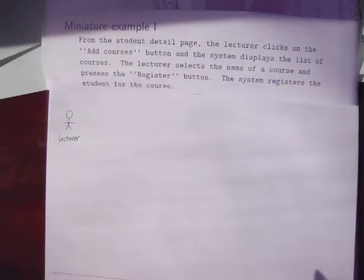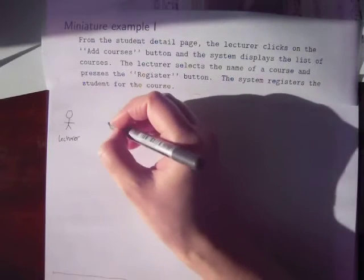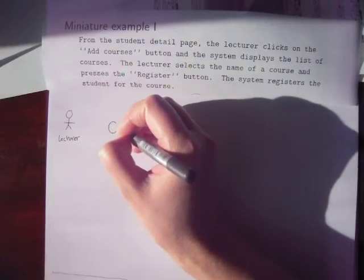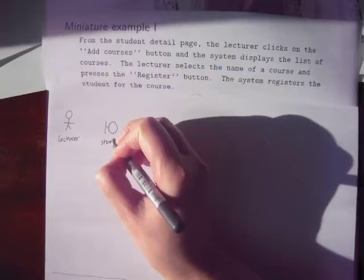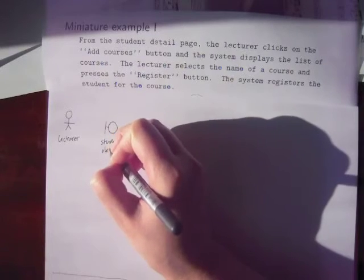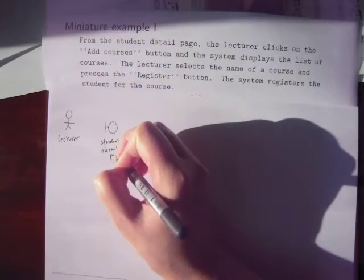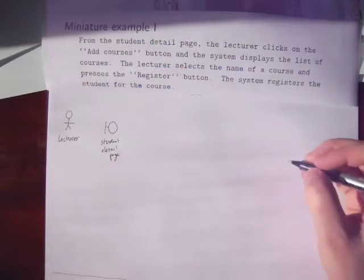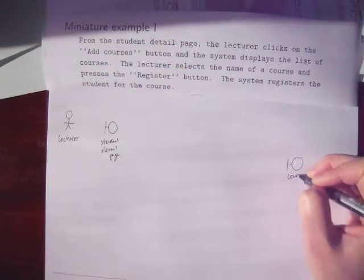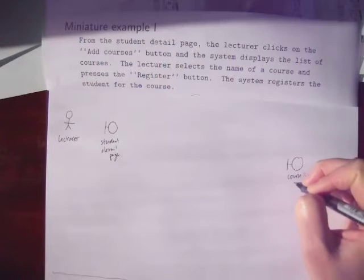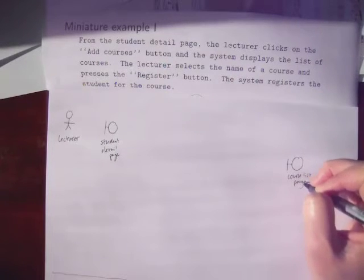From our screen storyboarding, we've got some idea about the boundary of our system, our boundary objects. We know that there's going to be a student detail page, and we know that later on we're going to get to a course list page. That's all we know about for now.